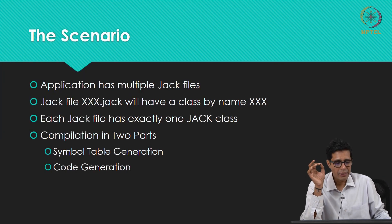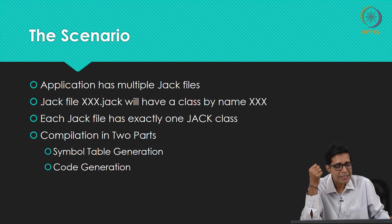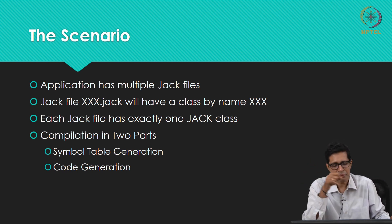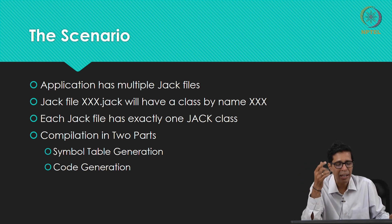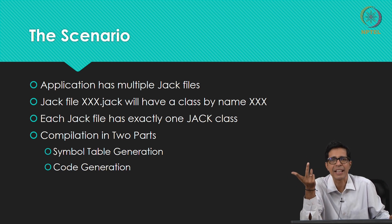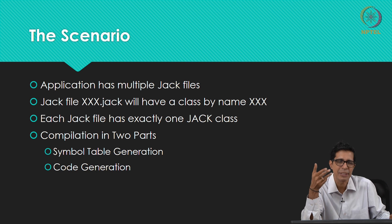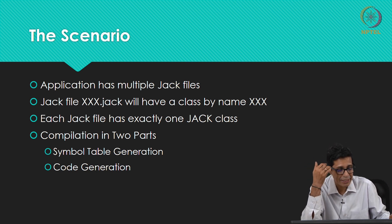Any application that you are going to compile will have multiple JAG files. Each JAG file will be named xxx.JAG and will have a class by name xxx. So if I have square.JAG, then we will have a class named square. Each JAG file will have exactly one class, and that class will have class variables and a set of subroutines, methods, or functions inside it.